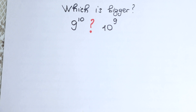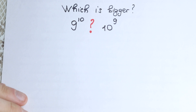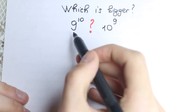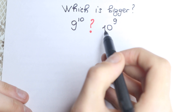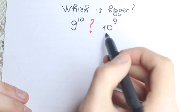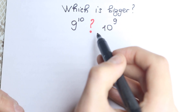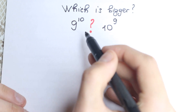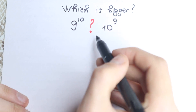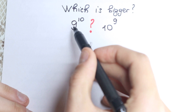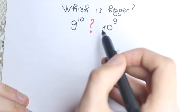Hello everyone, happy to see you here and welcome back to my channel Higher Mathematics. In this video let's try this really interesting question: which one is bigger? On the left hand side, 9 to the 10th power; on the right hand side, 10 to the 9th power. We don't have huge numbers like 50, 100, or 1000 here — we have really great numbers: 9 to the 10th and 10 to the 9th.